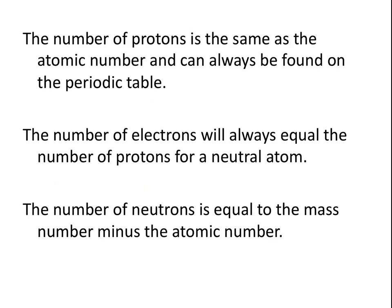How can we determine how many protons, neutrons, and electrons are in an atom of a given element? The number of protons is the same as the atomic number, and that can always be found on the periodic table. For a neutral atom, the number of electrons will always equal the number of protons. And because the mass number is equal to the number of protons plus the number of neutrons, when you take the mass number and subtract the atomic number, that will equal the number of neutrons in the atom.